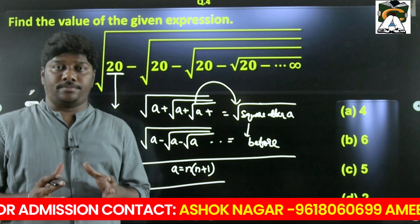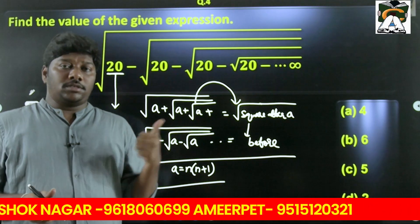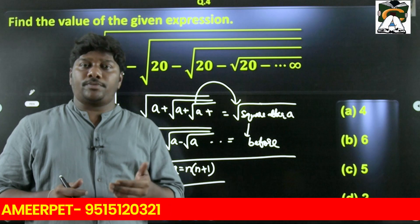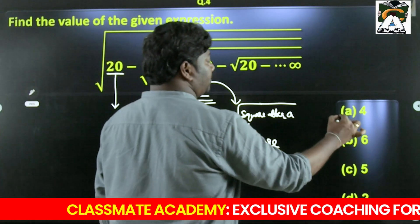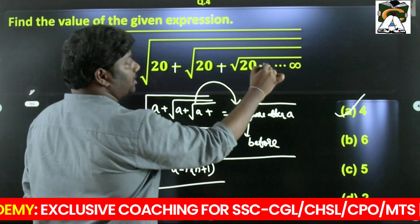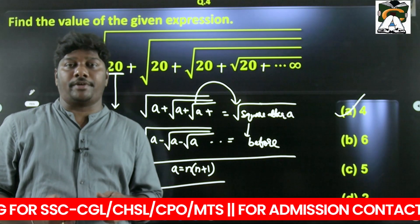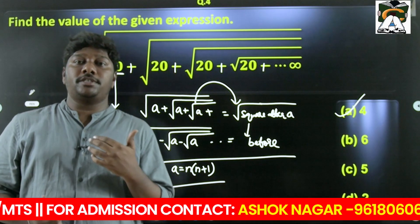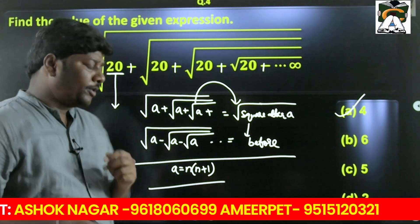When a is in the form n × (n+1) — meaning a is the product of two consecutive integers — for example, 20 = 4 × 5. For the minus case, look at the square number before 20, which is 16, so √16 = 4. For the plus case, look at the square number after 20, which is 25, so √25 = 5. Minus means look before, plus means look after.